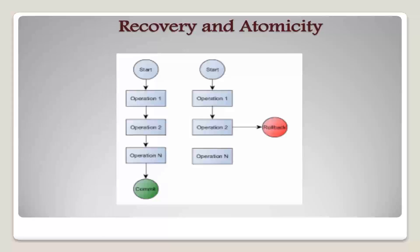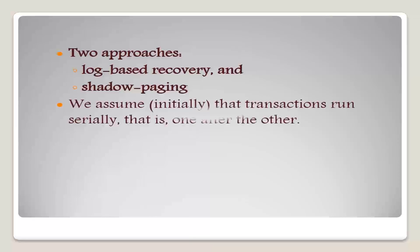To ensure atomicity despite failures, we first output information describing the modification to stable storage without modifying the database itself. For recovery, there are two approaches: first is log-based recovery and second is shadow paging. We assume that transactions run serially, that is one after the other.